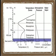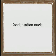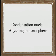Clouds can only occur in the troposphere if the air is saturated, and there is a surface available for condensation to occur. This surface is called condensation nuclei, and could be anything in the atmosphere, like aerosols, dust, or even volcanic ash.